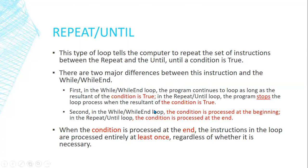In repeat-until, the condition is at the end. So even if the condition is true, it will execute the statements first, then check the condition and exit. The minimum execution count for repeat-until is one. The minimum for the while loop is zero, if the condition is false from the first time. So at least, whatever the condition is, repeat-until will be executed one time.